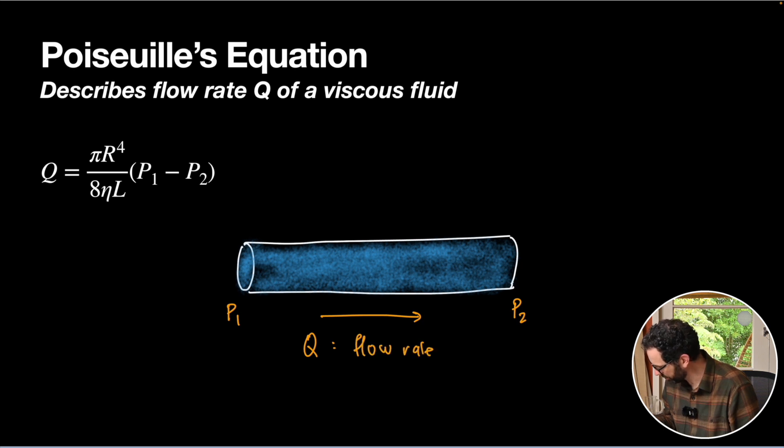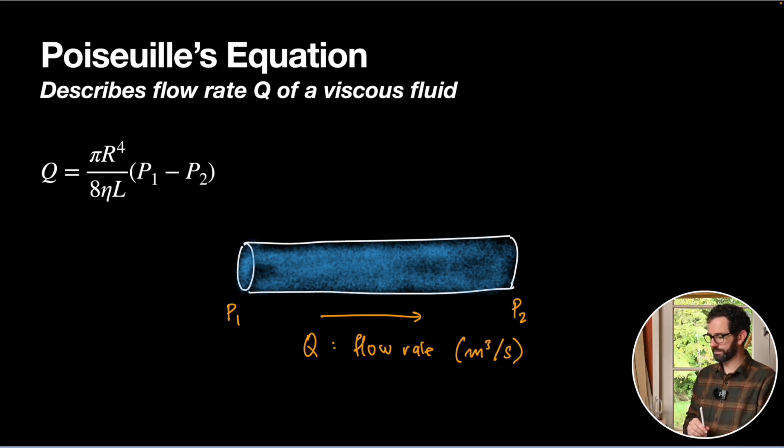Q is our flow rate. That's the Q in our equation, and that will be in our standard units of cubic meters per second. Pi is just pi, the mathematical pi. R is the radius of the pipe.